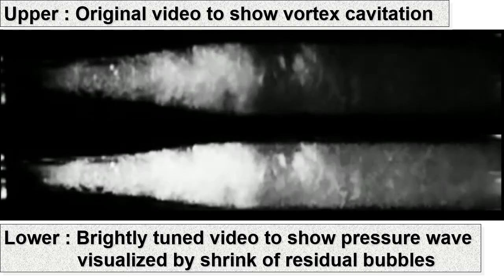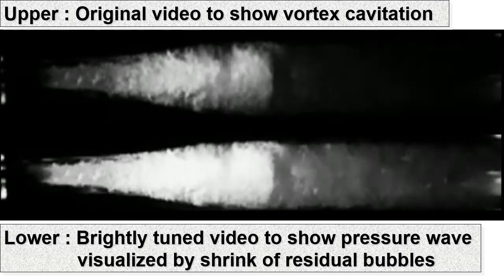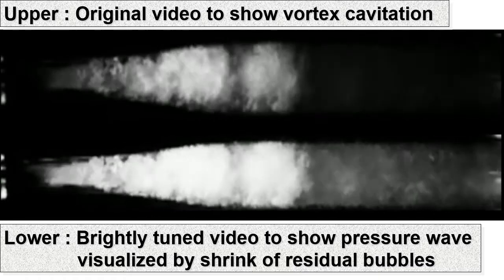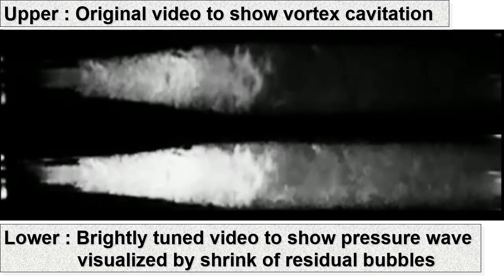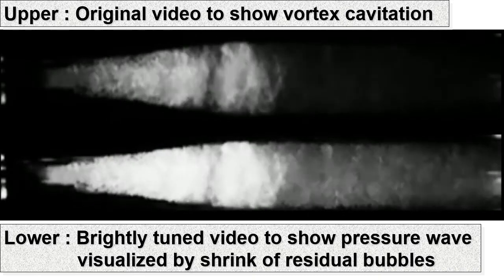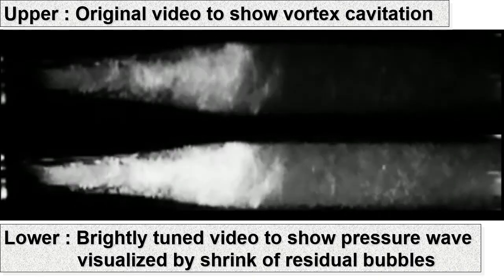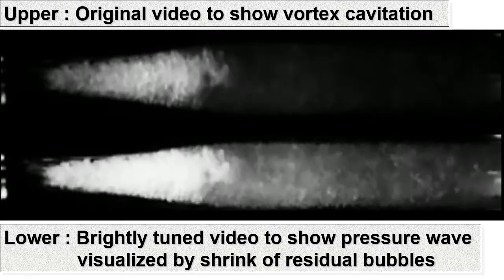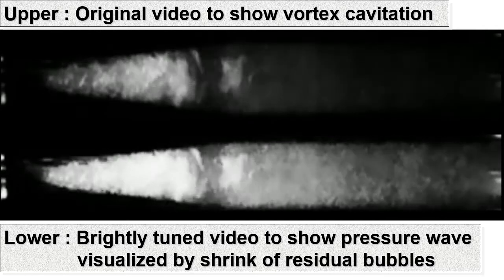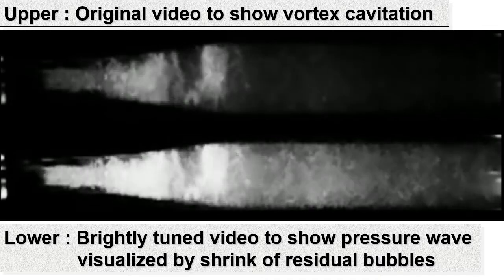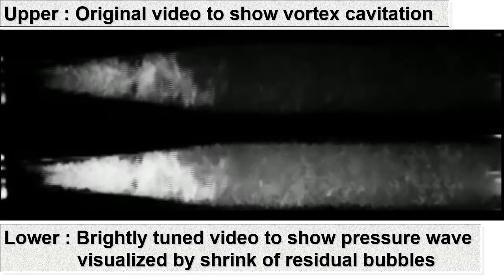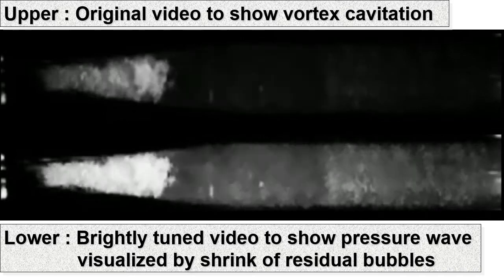These are high-speed videos. Vortex cavitations are shedding periodically. The lower video is brightly tuned in order to show the pressure wave. After vortex cavitation collapse, a pressure wave — visualized by the shrink of residual bubbles — is observed.